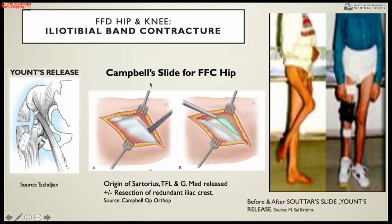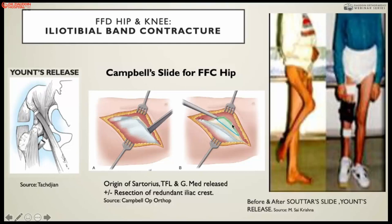In the Campbell slide, we release the tensor fascia lata, release the gluteus from the iliac crest and bring it down; if there is a redundant part of the iliac crest we release it as well. For severe contractures we also release the rectus femoris and iliopsoas tendon. The Thomas test confirms iliopsoas contracture — if the contralateral hip flexes when extending the other side, there is iliopsoas contracture. One case example shows flexion-abduction contracture at the hip and contracture at the knee significantly corrected by Ober's release and Campbell slide.